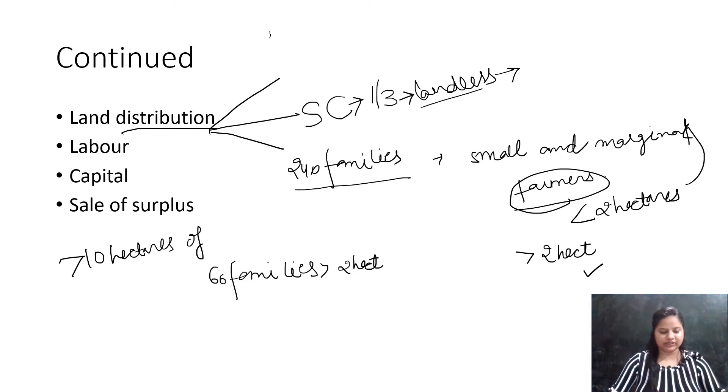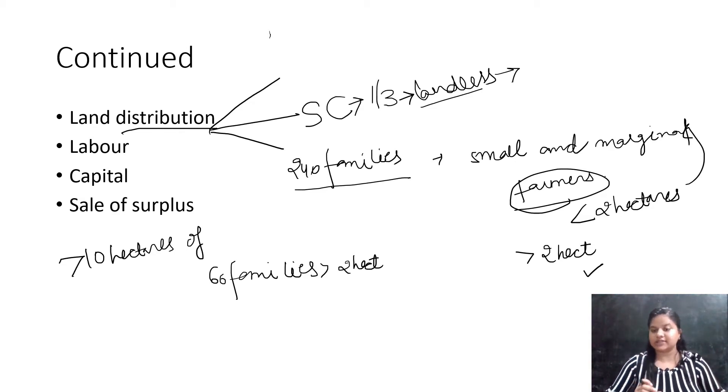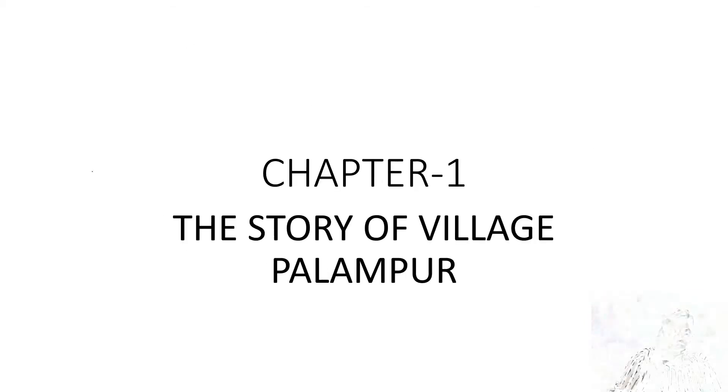We can see that land distribution is very unequal — few people have more land and the majority either do not have land at all, or they have a very small amount of land available to them. Now we will study how labor is being arranged in village Palampore.